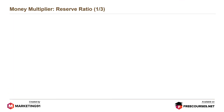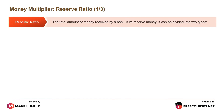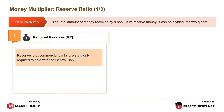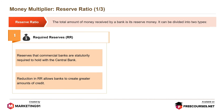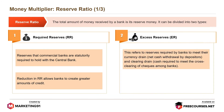Reserve ratio is the total amount of money received by a bank as its reserve money. It can be divided into two types: required reserves or RR, which are reserves commercial banks are statutorily required to hold with the central bank — reduction in RR allows banks to create greater amounts of credit; and excess reserves or ER, which refers to reserves required by banks to meet their currency drain, net cash withdrawal by depositors, and clearing drain, cash required to meet the cross-clearing of checks among banks. These reserves are held voluntarily by banks.